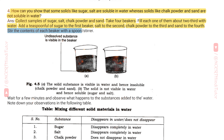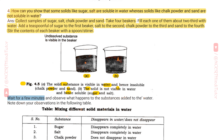As shown in figure 4.5, in figure A, the solid substance is visible in water and hence insoluble — that is chalk powder and sand. In figure B, the solid is not visible in water and hence soluble — sugar and salt. Wait for a few minutes and observe what happens to the substances added to the water.